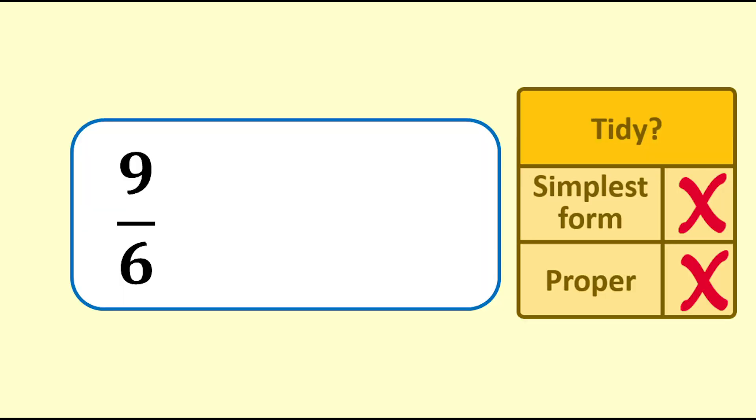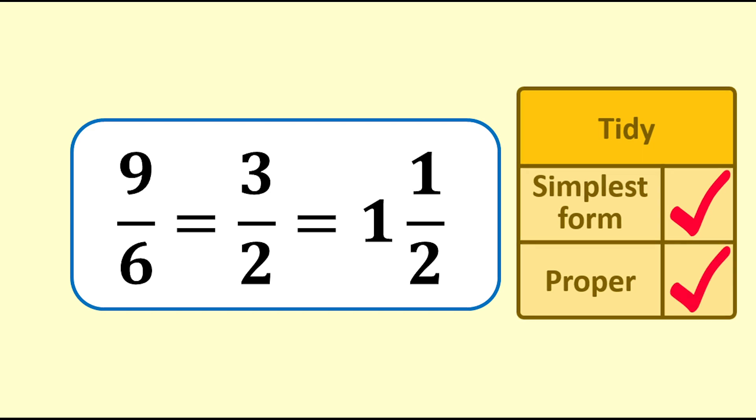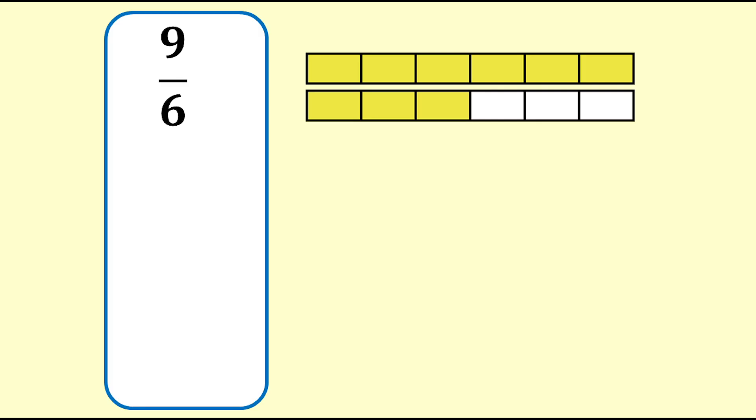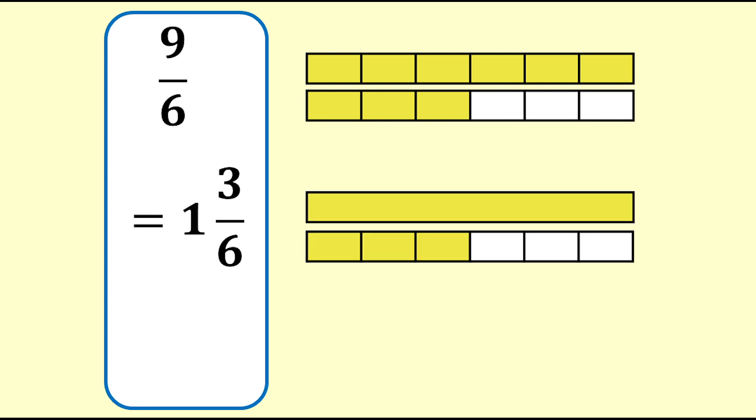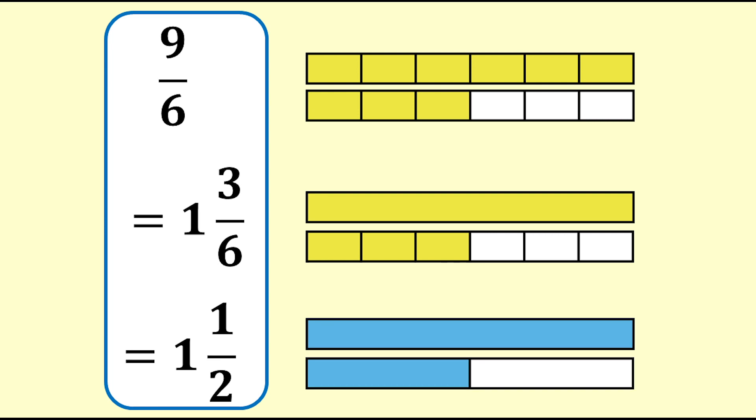So first, we simplify 9 over 6 by dividing both numbers by 3, giving 3 halves. This is now in simplest form, but it is not proper yet. Next we see that 2 halves make 1 whole and there is 1 half left over, so the answer is 1 and 1 half. 9 sixths equals 3 halves, which equals 1 and 1 half. We can do this in the other order and still get the same answer. 9 sixths equals 1 and 3 sixths, which equals 1 and 1 half.